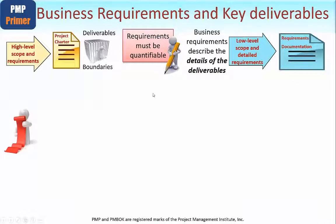Returning to requirements — high-level scope and high-level requirements are created within the project charter, laying down at a high level what the deliverables of the project are and what the boundaries or scope will be. Every requirement must be quantifiable. Remember: if you can't measure it, how could you prove to your client that the requirement has been met? You will want to take those high-level requirements and break them down into low-level, detailed requirements within the requirements documentation.